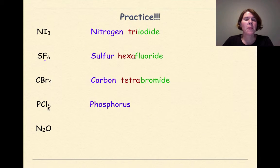The next one, phosphorus again. Now we have five, which is pent, and then the Cl, which is chlorine, so we're going to change that to chloride. So phosphorus pentachloride.